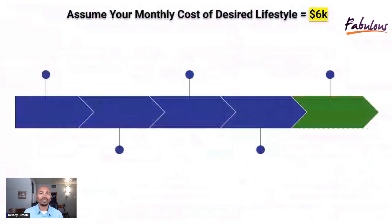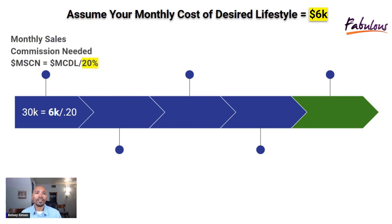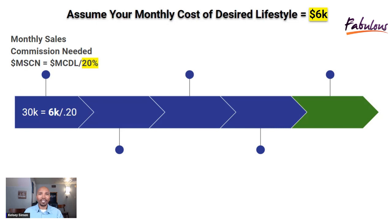The first thing I want to share with you is I want you to assume that your monthly cost of the desired lifestyle that you want is at $6,000. So we're going to take this example of $6,000. The first formula is for you to discover how much sales commissions you need to earn in order to get a cash flow of $6,000 every single month, assuming that 20% of your cash flow will be used to pay for your desired lifestyle.